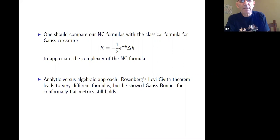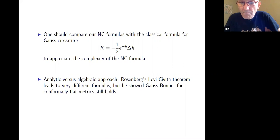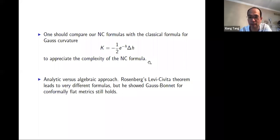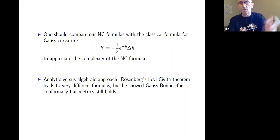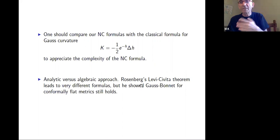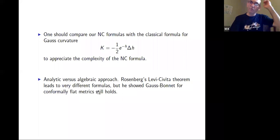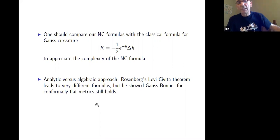I should also say, related to the analytic versus algebraic approach: Jonathan Rosenberg proved a Levi-Civita-type theorem — you create a connection from the metric. Once you have a connection, you can use a noncommutative Chern-Weil theory. He was able to define the full curvature tensor in those situations, and he was also able to prove the Gauss-Bonnet theorem for conformally flat metrics. But we don't know the relation between the two formulas, and we want to see this for general metrics. These are all interesting open questions.